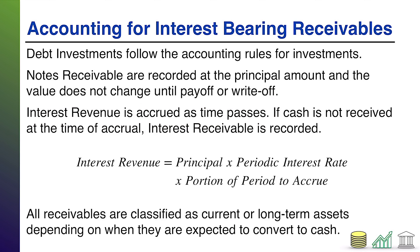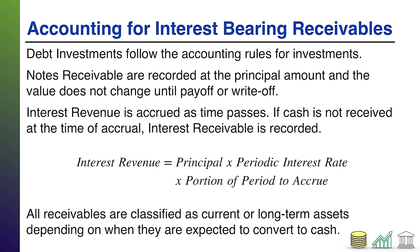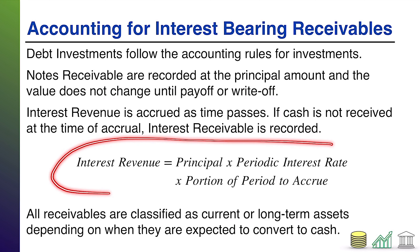At period end, when you accrue interest revenue, that's all about earning revenue — you've loaned somebody money, and the longer they take to pay you back, the more you make. The cash receipts agreed to in the interest contract may not align with your period end. To the extent you do not receive cash at the time you record the accrual, you instead debit interest receivable. Later when you get the cash, you'll remove the receivable and record the receipt of cash.